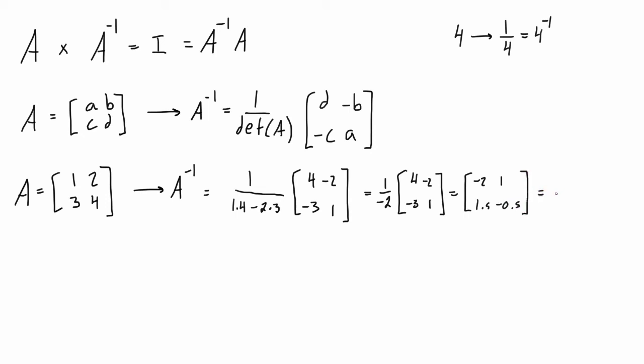All right, so this matrix here is equal to the inverse of A. And now that we have that, we want to check that both of these statements are basically going to equal the identity matrix, which is a matrix where the main diagonal is ones and everything else is zeros.